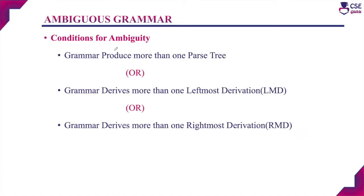The three main conditions for ambiguity are: if the grammar produces more than one parse tree, if the grammar derives more than one leftmost derivation, or if the grammar derives more than one rightmost derivation, then the given grammar is an ambiguous grammar. Now we will see one example based on all three conditions.